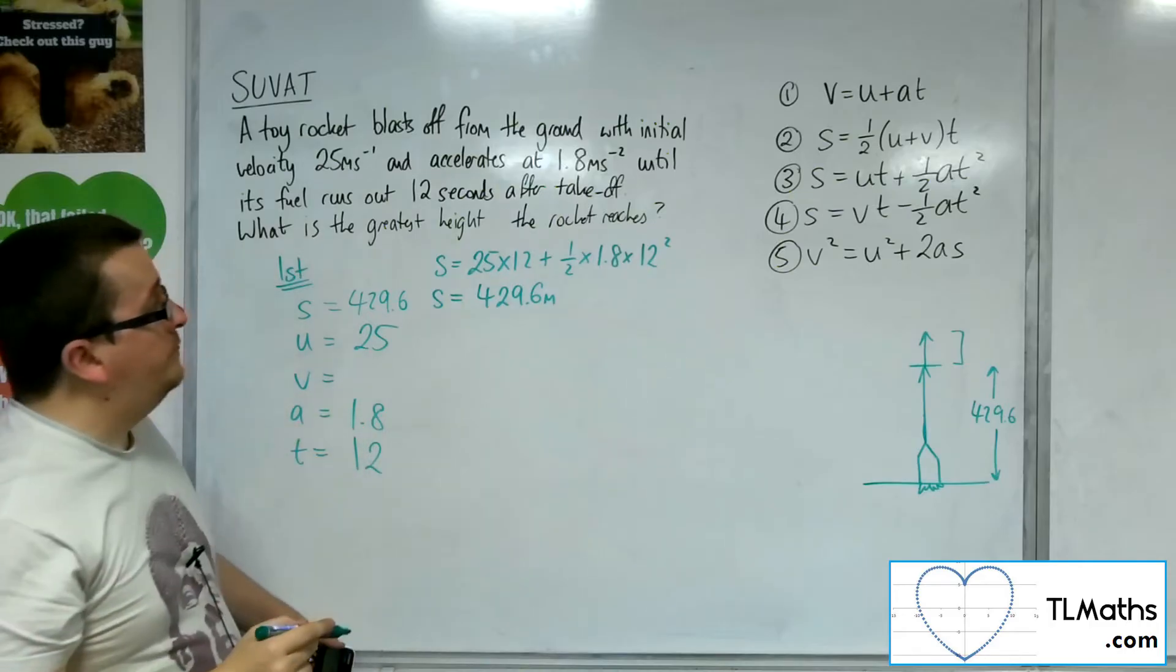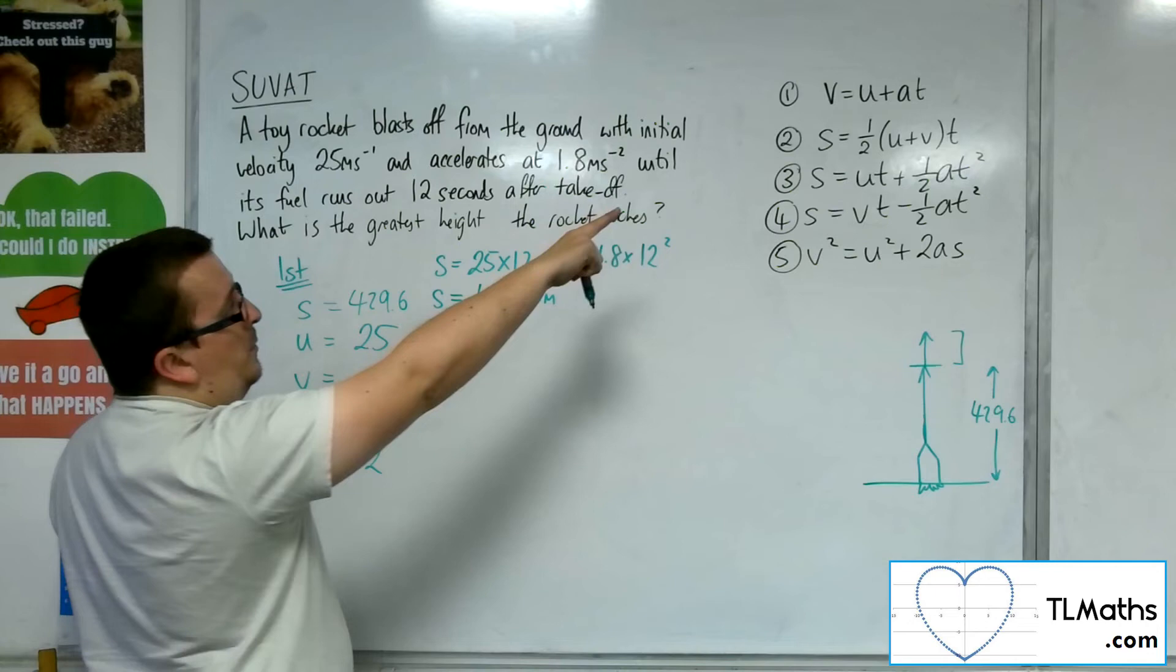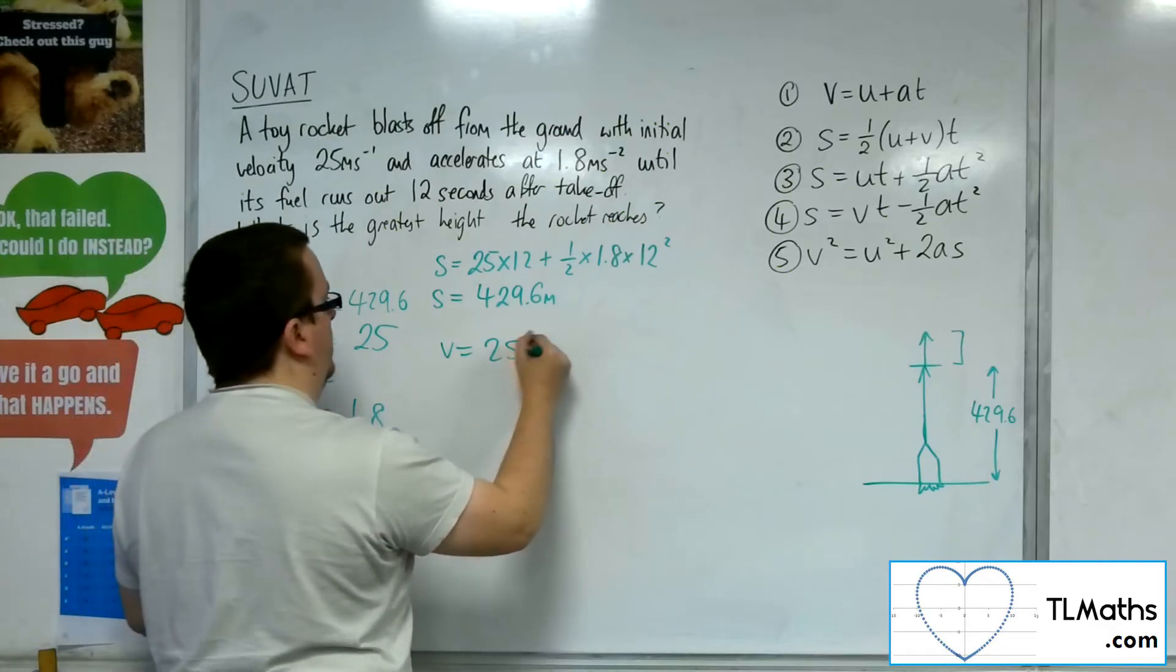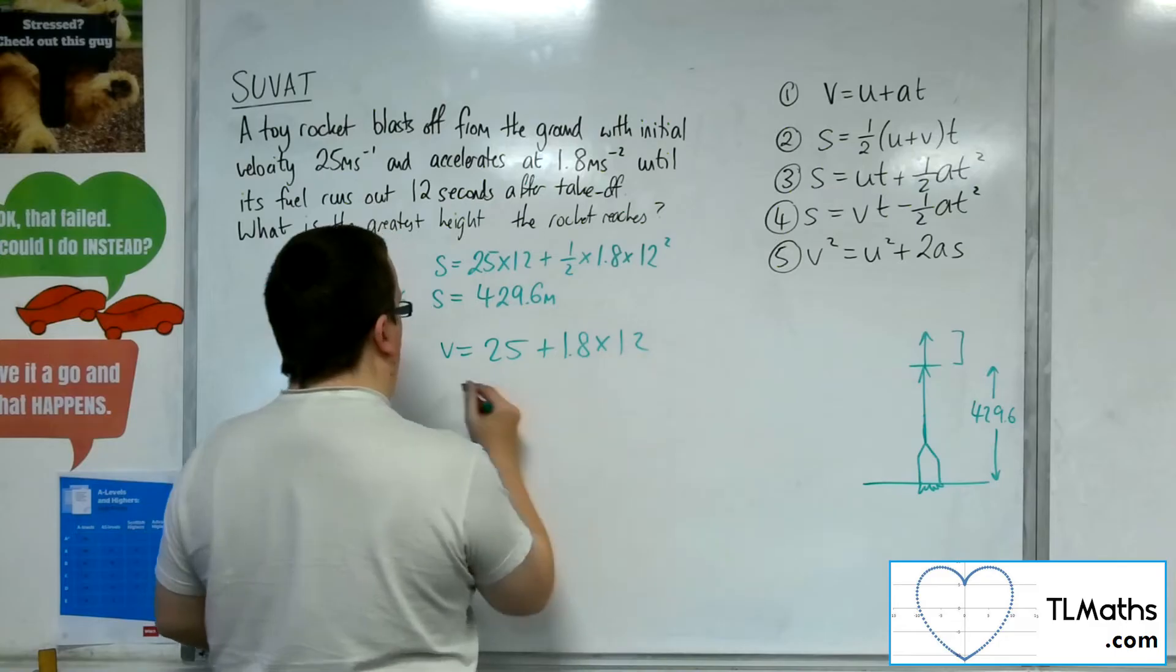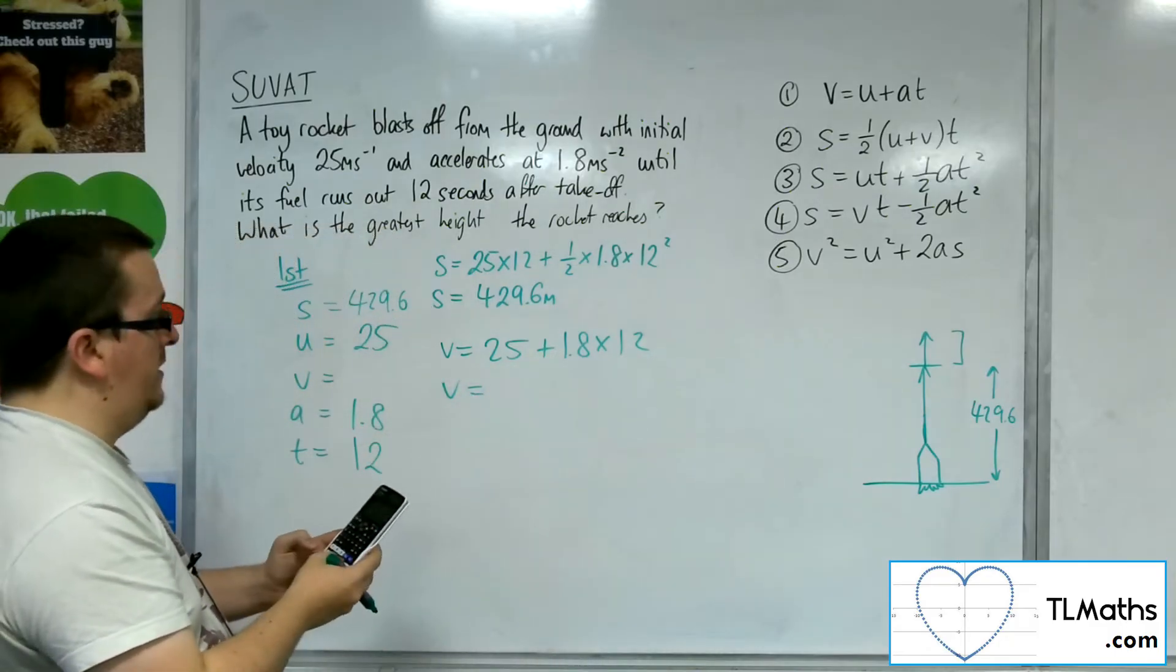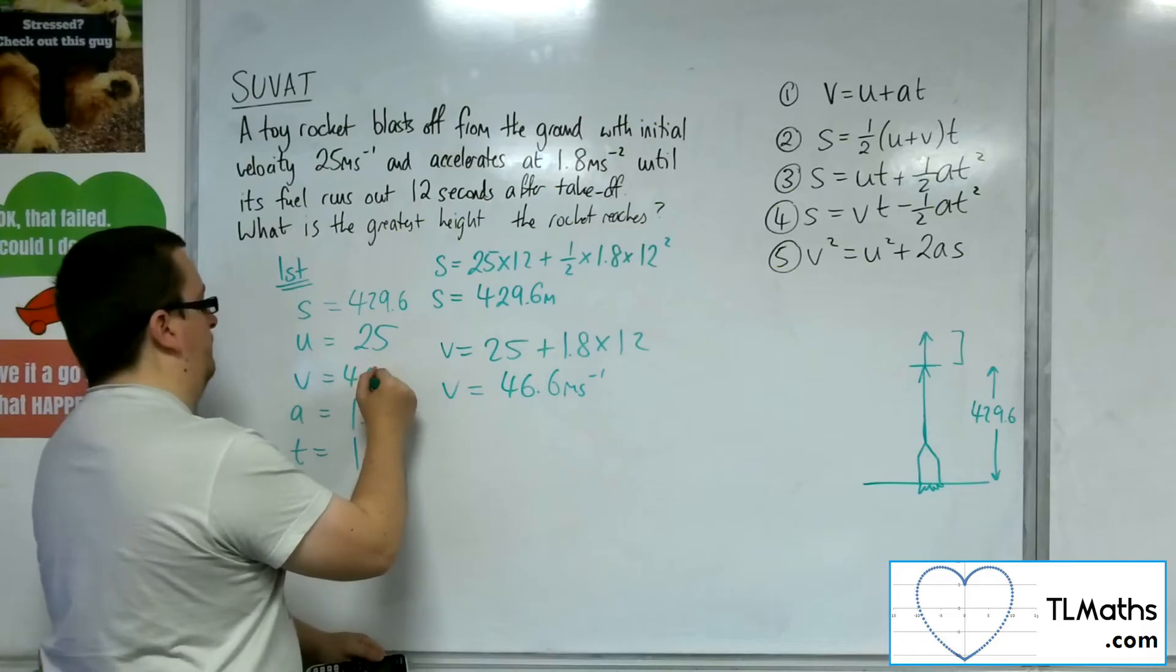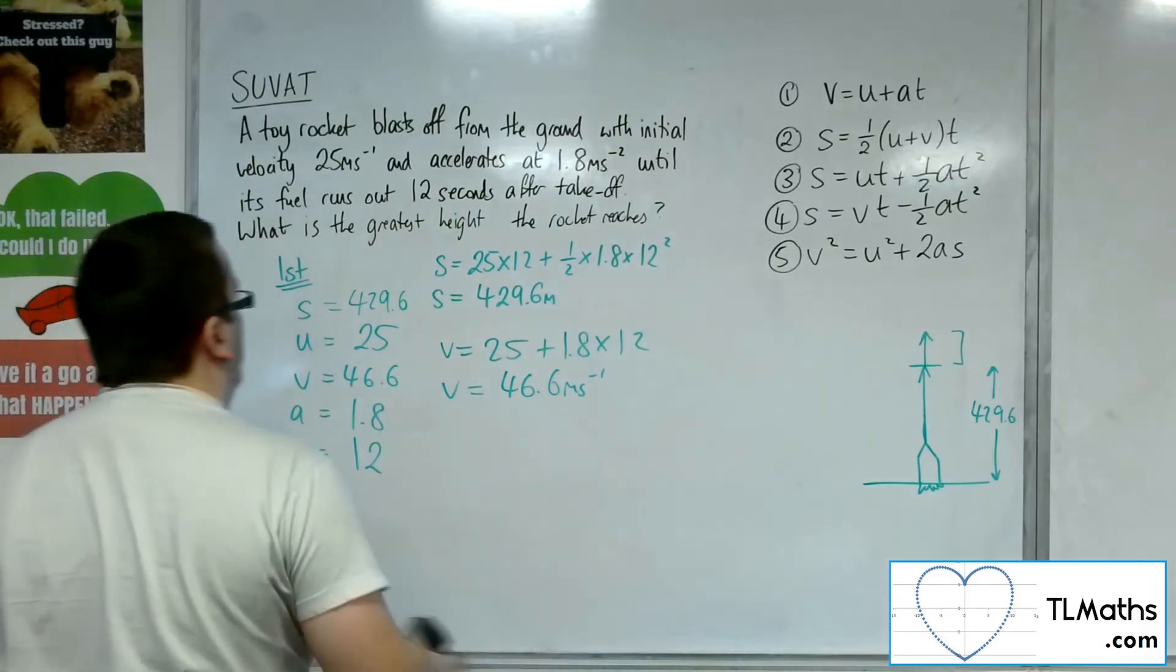And then V, well, choices, choices. Let's go with equation number 1. V equals U plus AT, so 25 plus A, 1.8, times T, 12. So the final velocity is 25 plus 1.8 times 12. And that's 46.6 metres per second. So that is the first section of motion.